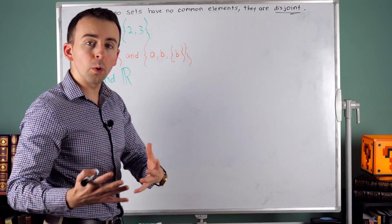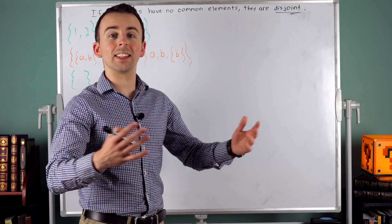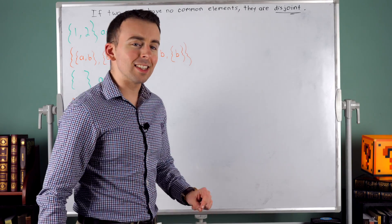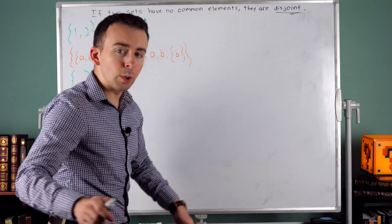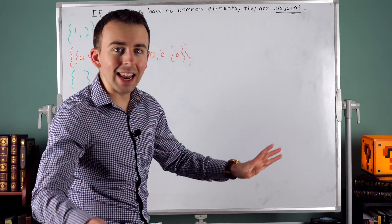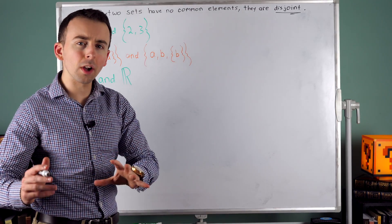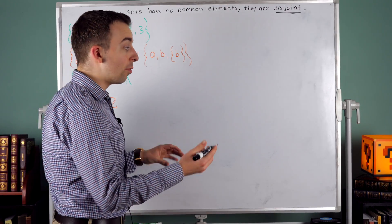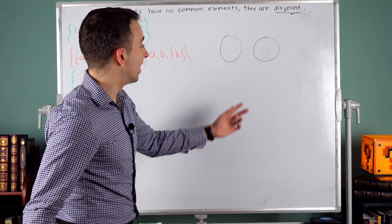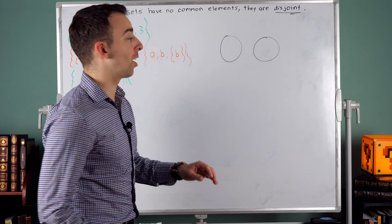It's just two sets having no common elements, but it will come up again and again as we continue to study different topics in mathematics. So let's see some examples. What do disjoint sets look like in a Venn diagram? Disjoint sets have no common elements, so in a Venn diagram, disjoint sets look like that — there's no overlap between them. They have no elements in common.